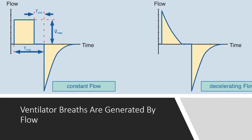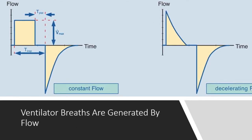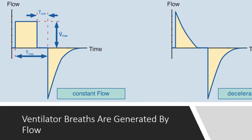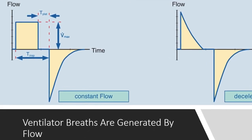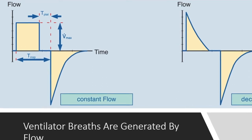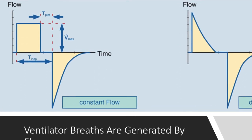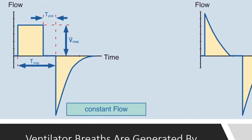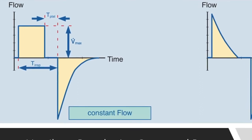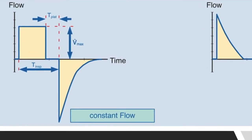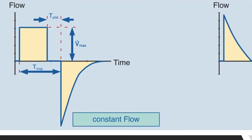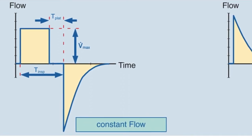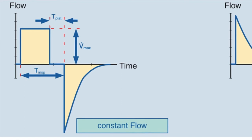Starting with the volume-style breath: there is no flow at the start, then we go into inspiration. During a volume breath, you get a constant flow throughout inspiration — a constant flow until the set target volume is reached, after which no more flow continues but we're still in inspiration. Then we cycle into expiration, the patient expires, you get reverse flow, which then diminishes back to zero waiting for the next breath.